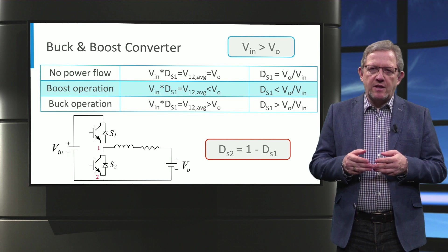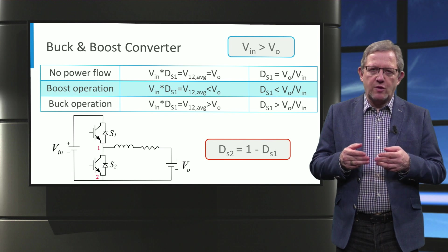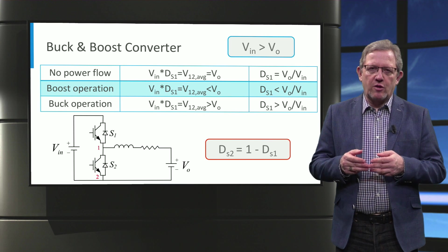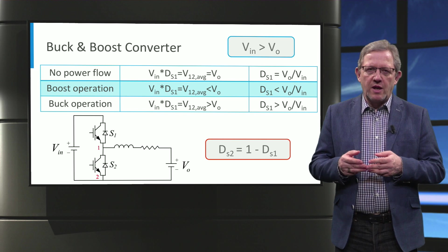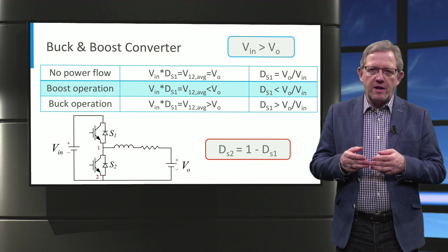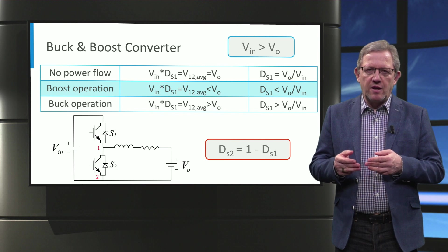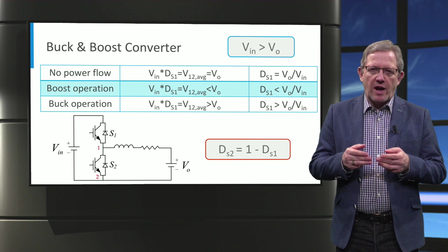The average current can flow in either direction depending on the magnitude of average voltage across terminals 1 and 2 and the output voltage V_0. Whether the converter is working on the buck mode or boost mode can be determined by comparing the duty cycle to the ratio between the input voltage V_in and the output battery voltage V_0, as it is summarized in the table.